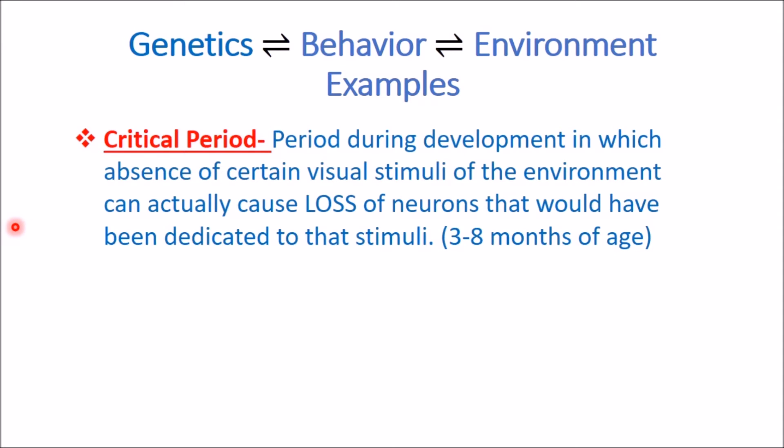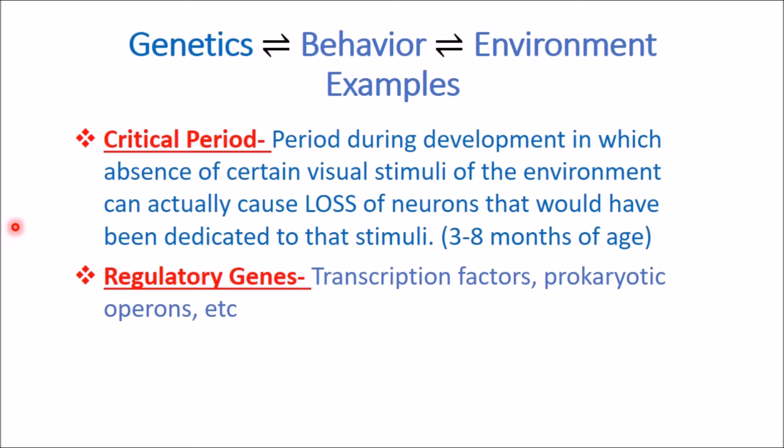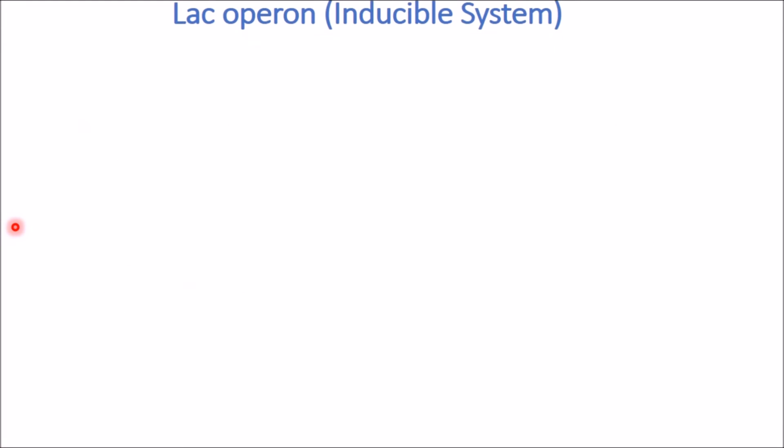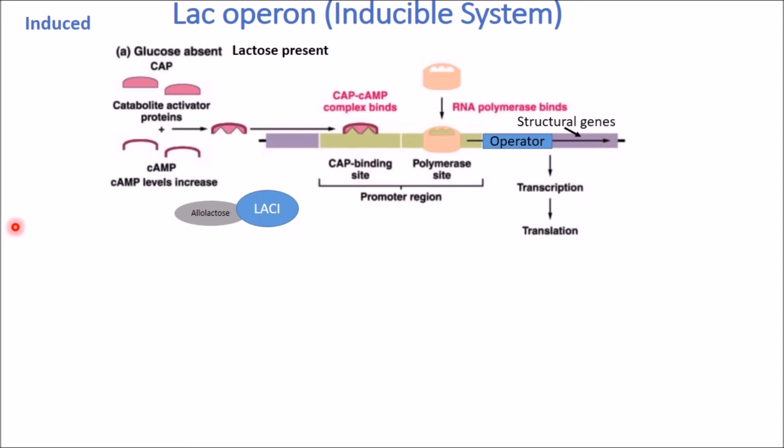Other examples include regulatory genes, transcription factors, and the prokaryotic operon. Sigma factors allow for the recognition of promoter elements by RNA polymerase in E. coli and other prokaryotes. These are all things affected by environment. I'm going to give you a specific example of the prokaryotic operon — specifically the lac operon. The lac operon is an inducible system associated with promoter elements, activators, repressors, and operator elements.